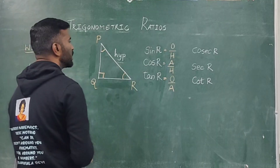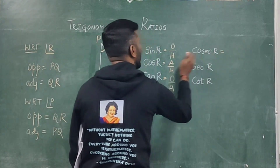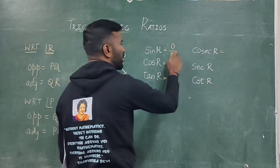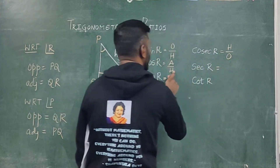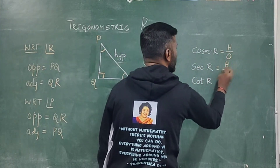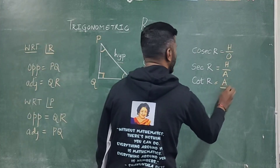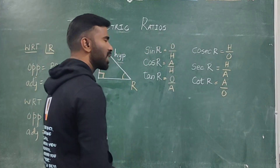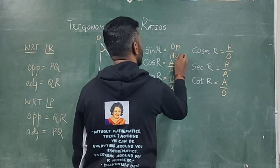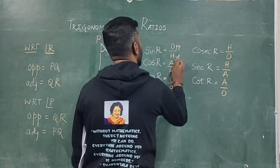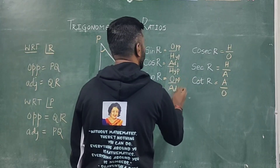Cosecant is hypotenuse by opposite. Secant is hypotenuse by adjacent. Cot is adjacent by opposite. In the examination, remember the first three: opposite by hypotenuse, adjacent by hypotenuse, opposite by adjacent.